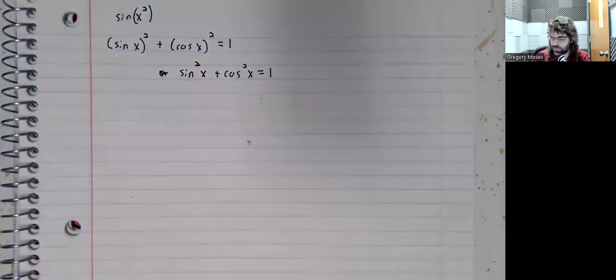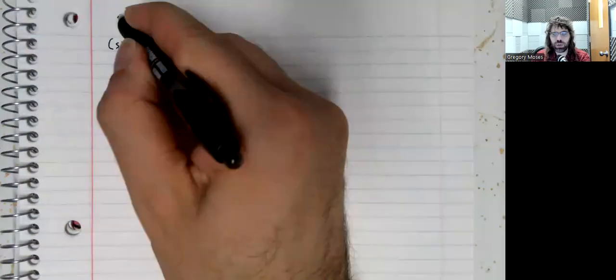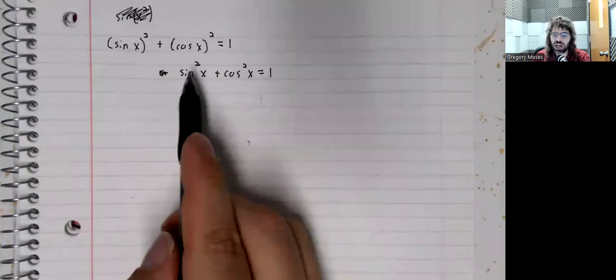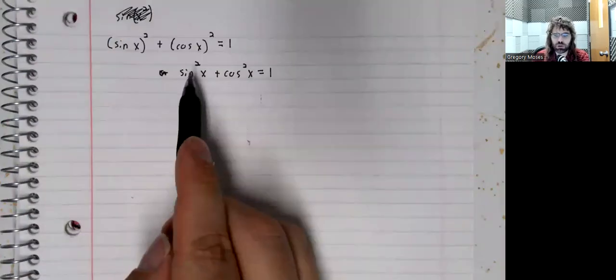...or whether you meant for the x to be squared. This is unambiguous. We're squaring the sine. We don't need the parentheses.